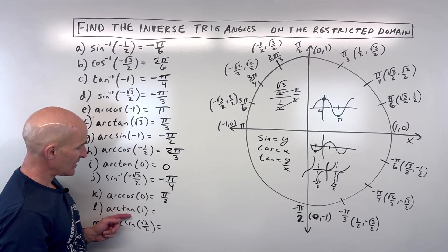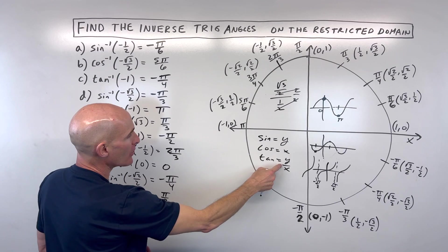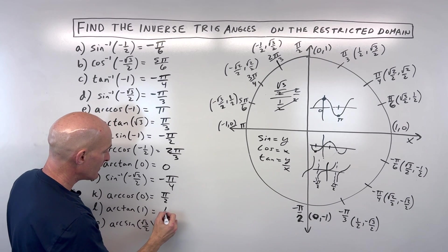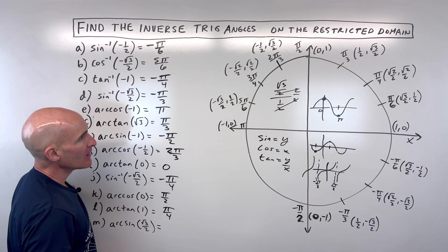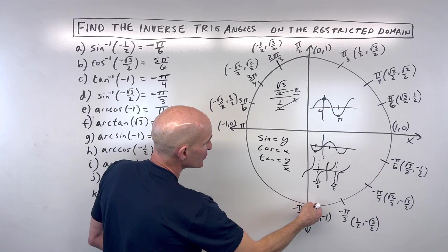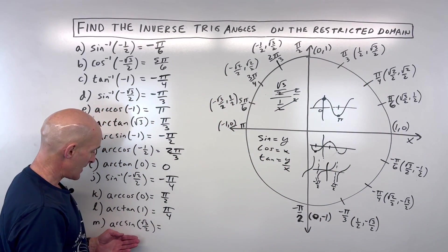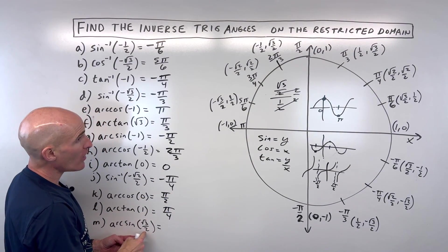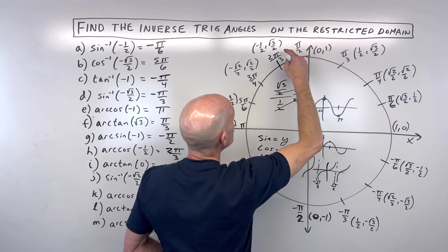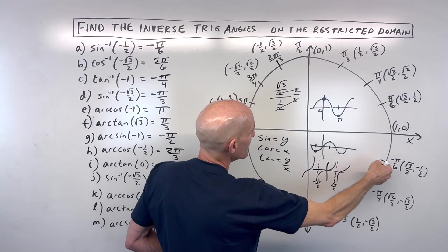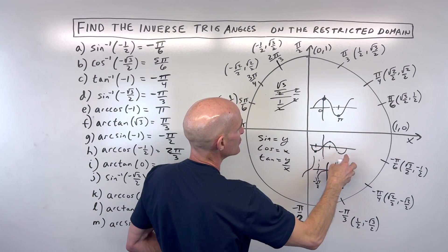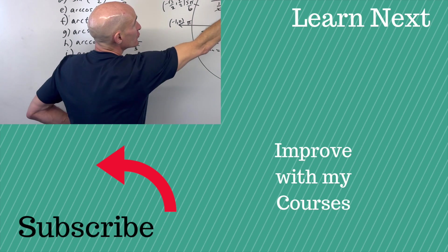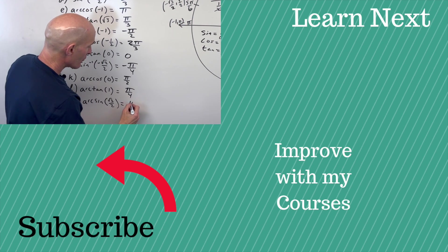For letter L: arc tangent of one means tangent of what angle equals one. Tangent is y over x — that would be root two over two divided by root two over two, and anything divided by itself is one. So that's pi over four. Remember tangent is restricted from negative pi over two to positive pi over two. For letter M: arc sine of root three over two means sine of what angle equals root three over two. Sine is the y-coordinate. It occurs in two places, but arc sine is restricted from negative pi over two to positive pi over two. The answer is pi over three radians.